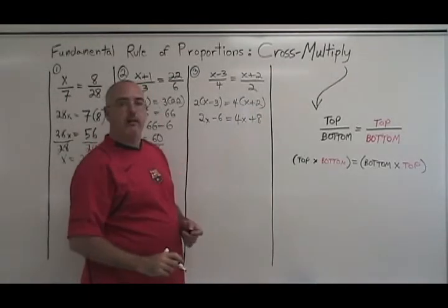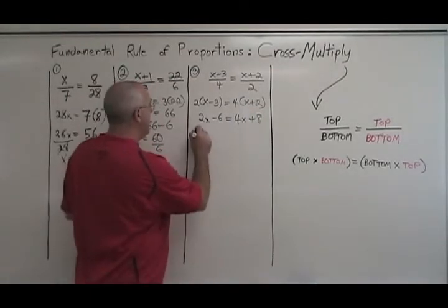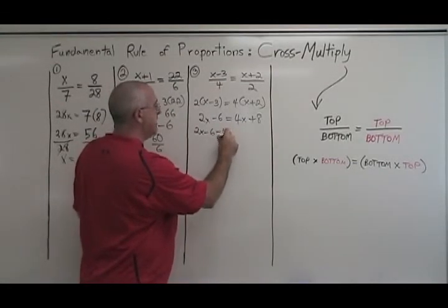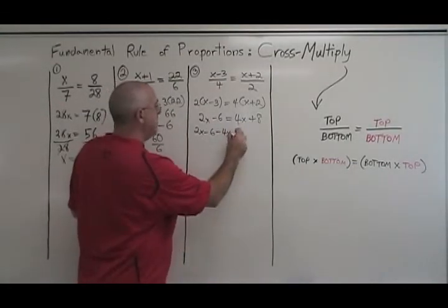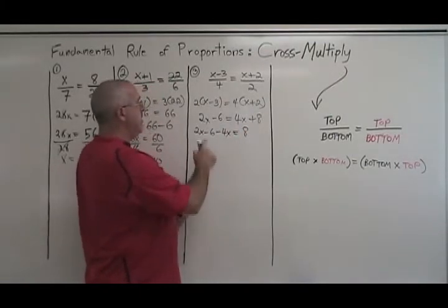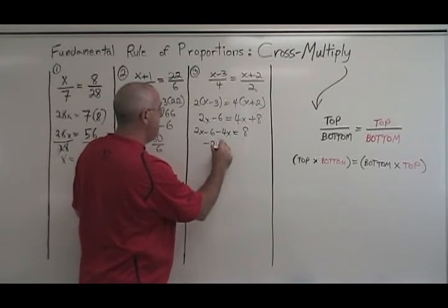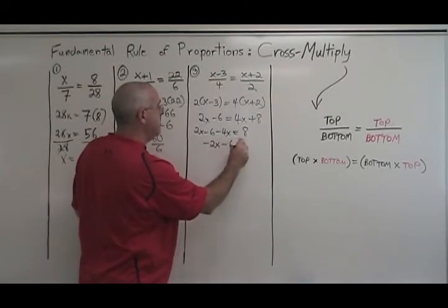Let's get all of our x's on the left side. We have 2x minus 6. Moving the 4x over we get negative 4x minus 4x equals 8. We can combine these x's. 2x minus 4x is negative 2x minus 6 equals 8.